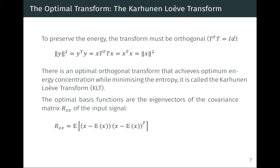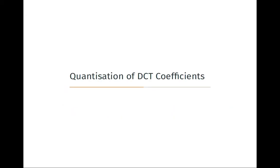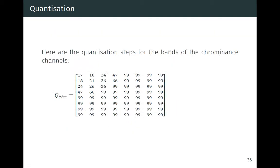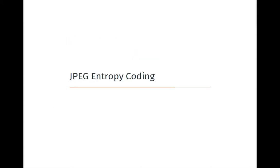Today we're going to mainly finish the DCT and JPEG. I wanted to come back because last time we finished very quickly the JPEG entropy coding, so I just wanted to spend a bit more time here and come back to an example of how you actually code an 8x8 DCT block, so you can see the bits of JPEG with your very own eyes.